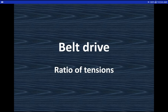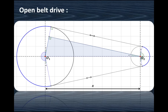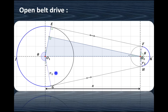In this video, we will see the introduction to belt drive and how to derive the equation of ratio of tensions in case of belt drive. Here we have shown the open belt drive. This is the center distance between the two pulleys. This is known as the driver pulley and this is the driven pulley. R1 is the radius of the driver pulley and R2 is the radius of the driven pulley.